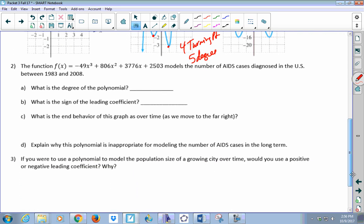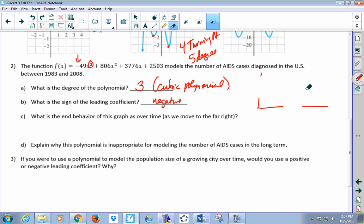Here is a similar idea, but now we're looking at a context for a function. It's a cubic function. It models the number of AIDS cases diagnosed in the United States between 1983 and 2008. So the degree is three. We call it a cubic polynomial. The sign of the leading coefficient is negative, which tells us that at some point this is modeling. We don't really know what the scatter diagram looks like here, but we do know something about the end behavior.